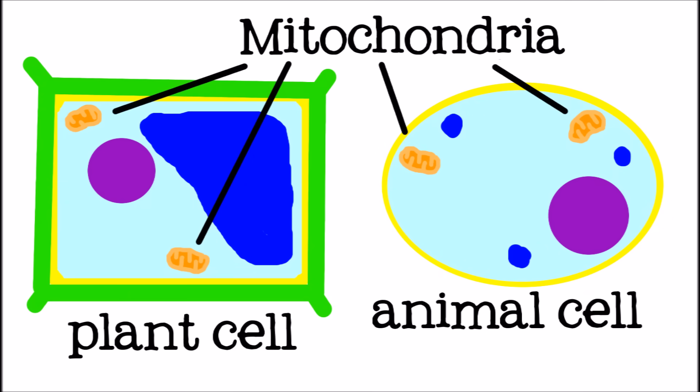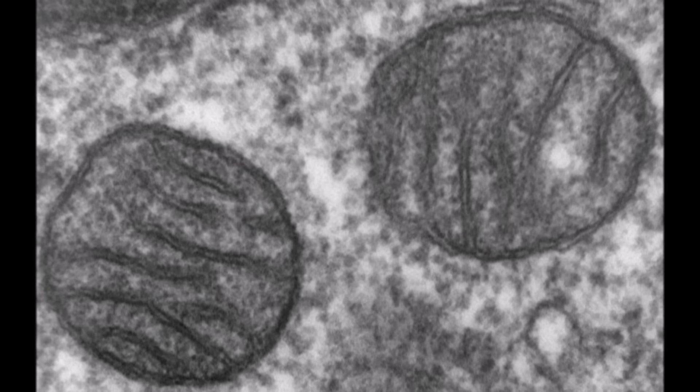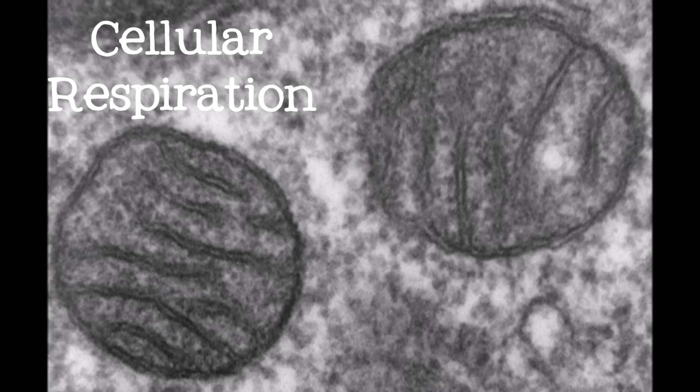Mitochondria are famously the powerhouse of the cell, but they are important because they take food and turn it into energy that the rest of the cell can use. This process of using oxygen to break down sugars into chemical energy is called cellular respiration.